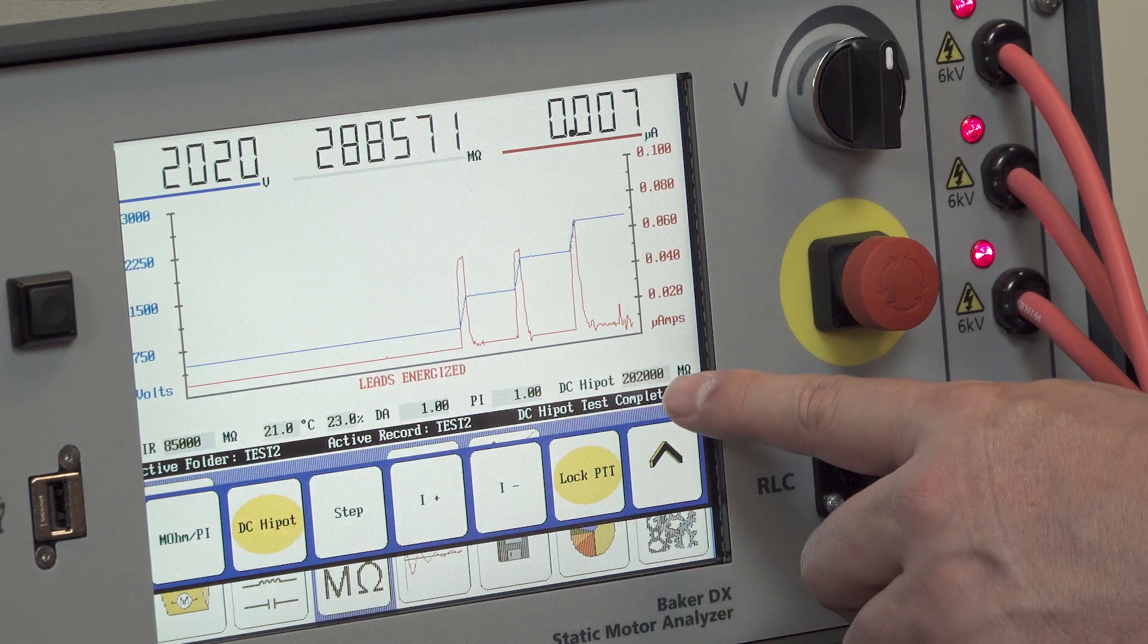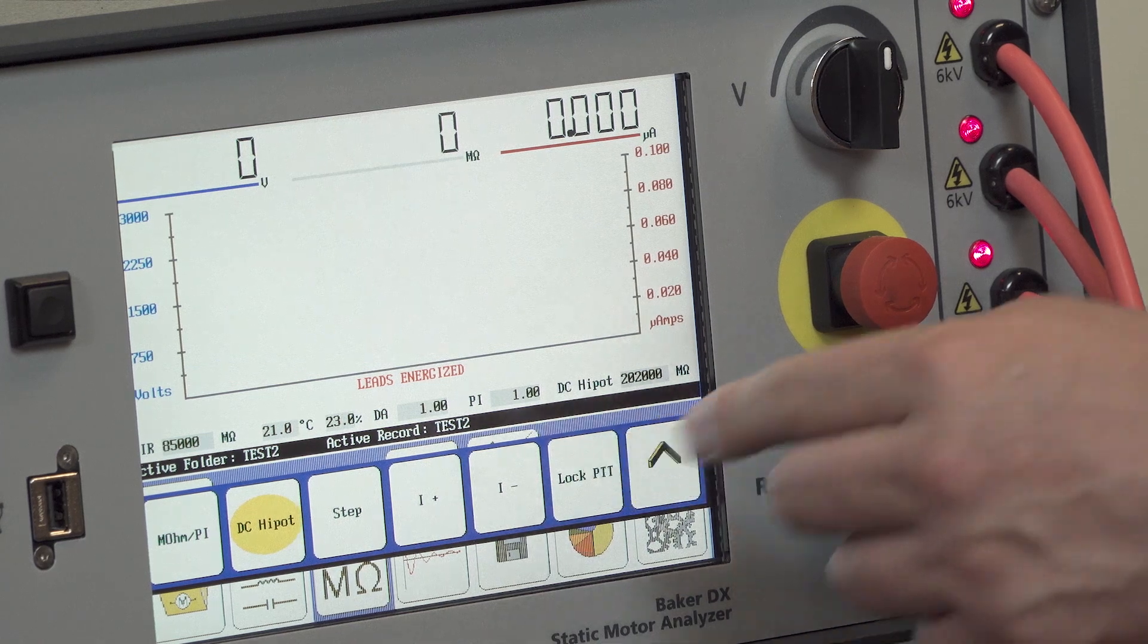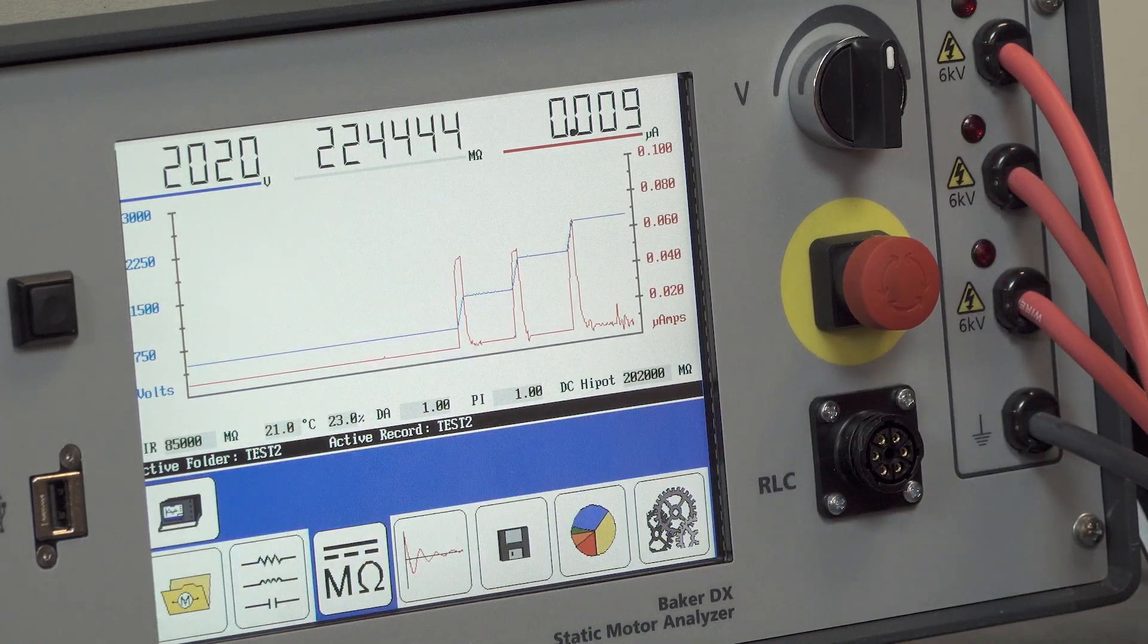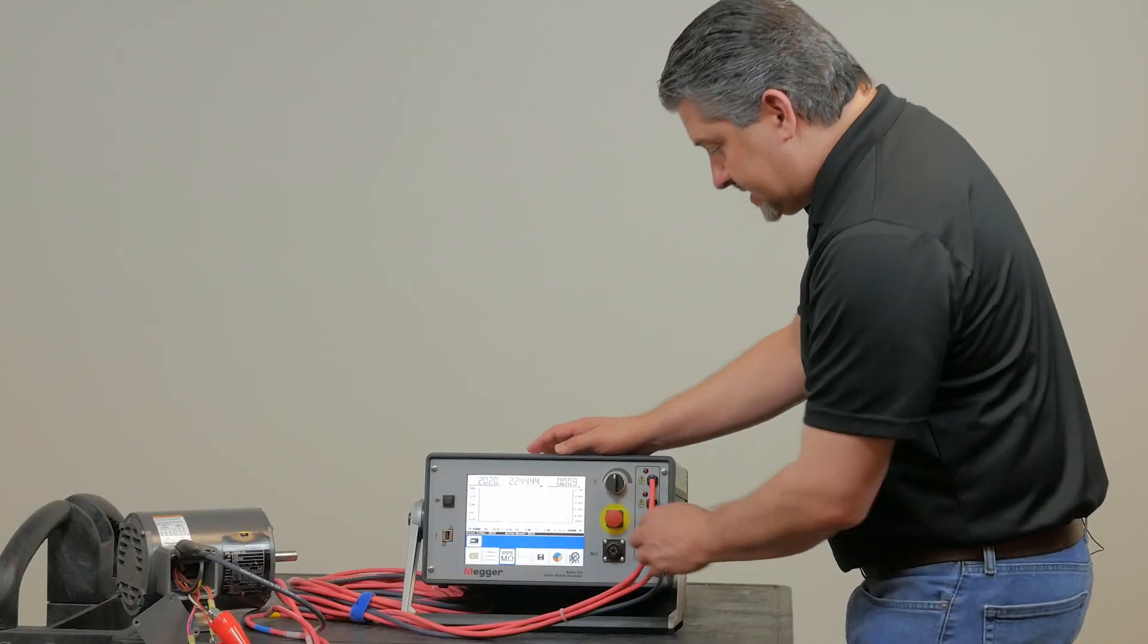To stop the testing, I'll simply press the lock PTT button and that will stop the test, discharge the winding. Okay, now that test is complete.